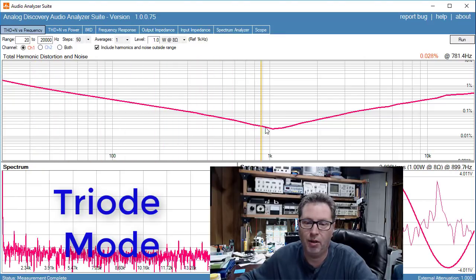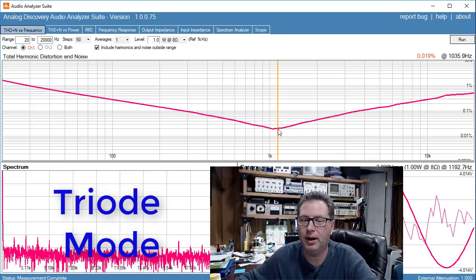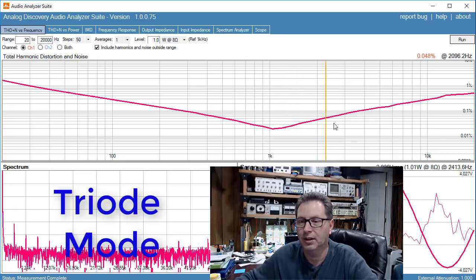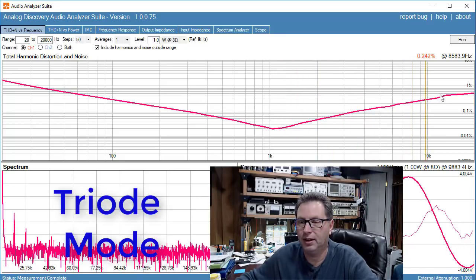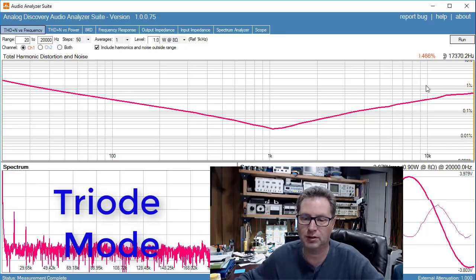And it rides that all the way down here to 0.019 percent distortion up around a kilohertz, and then it's slowly on an incline all the way up. Even at 20 kilohertz you're at 0.466 percent distortion, so some really good looking numbers along the way here.